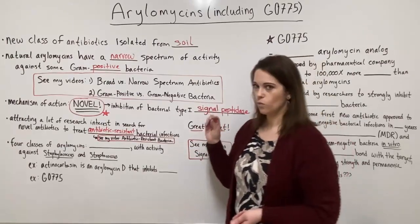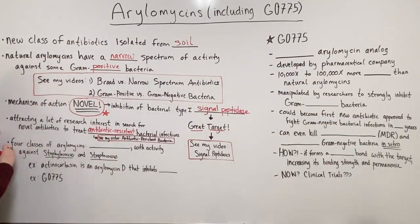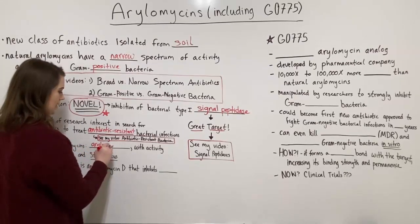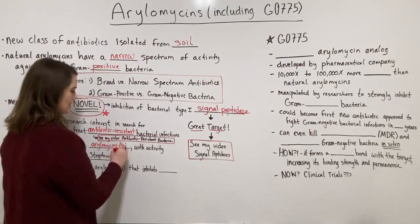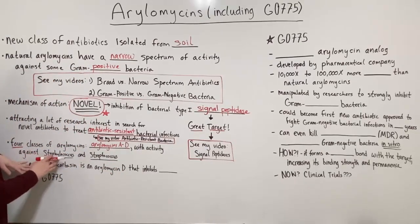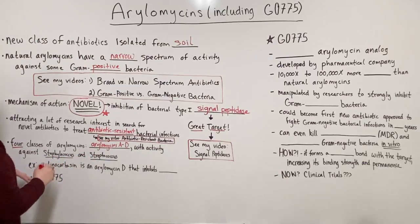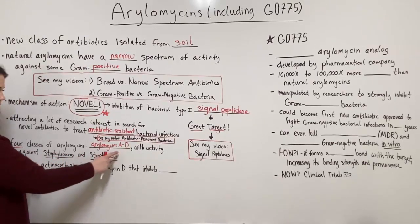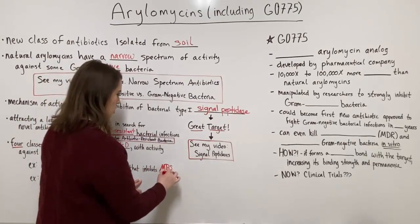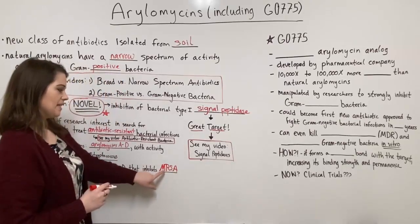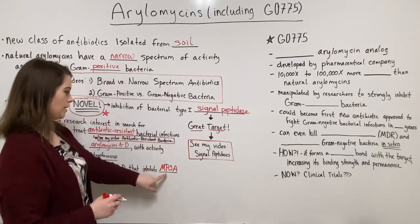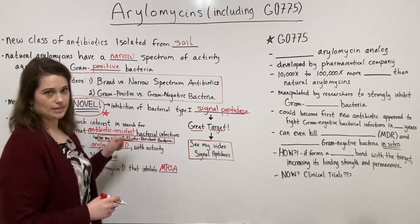With arylomycins, as they've been studied, we have found that there are four different classes: arylomycins A, B, C, and D. They have activity mainly against Staphylococcus and Streptococcus species. One example is actinocarbacin. This is an arylomycin D — the fourth group — and it is actually able to inhibit MRSA. MRSA is methicillin-resistant Staphylococcus aureus, and it is causing big problems for our communities and hospitals. You can learn more about MRSA in my antibiotic resistant bacteria video.